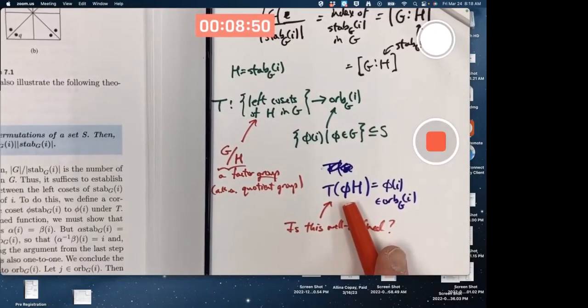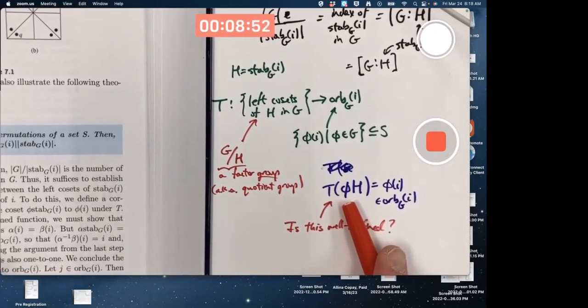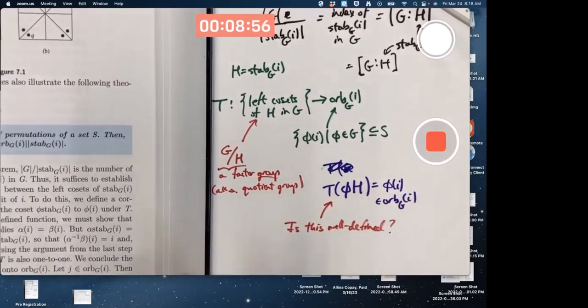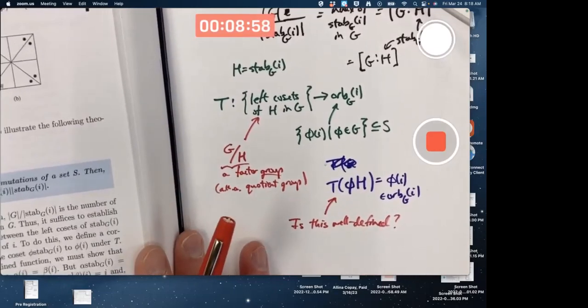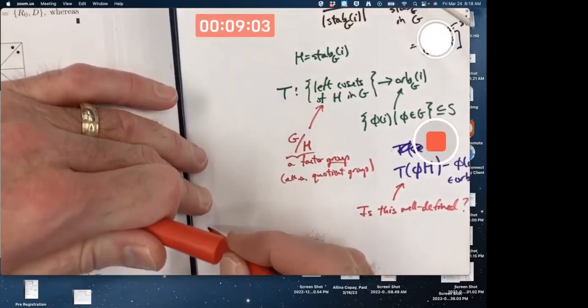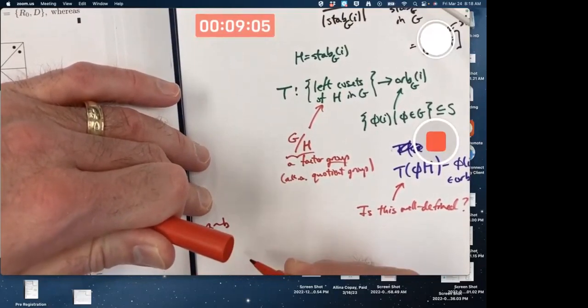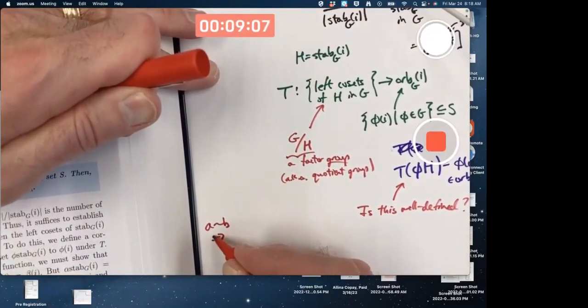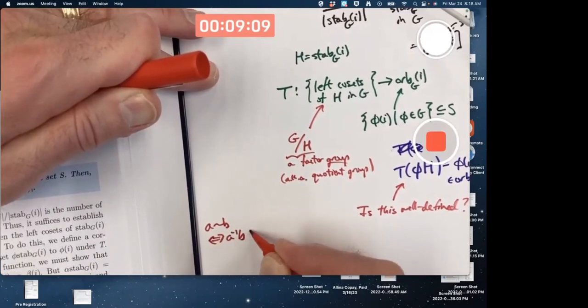Cosets are equivalence classes. We talked about this. Under a certain equivalence relation, again, to remind you, the equivalence relation was that A was equivalent to B if and only if A inverse B was in H.